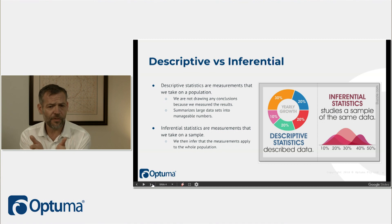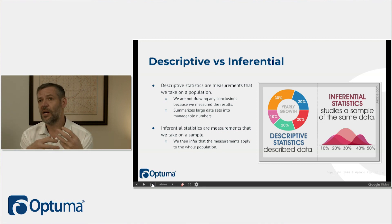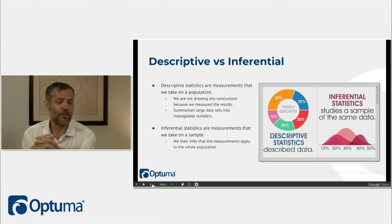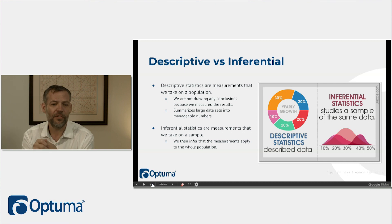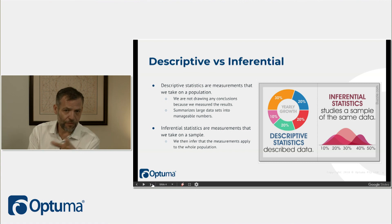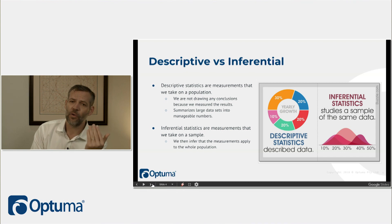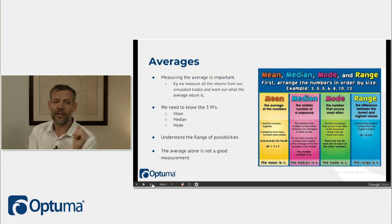With descriptive statistics we're not drawing any conclusions because we've measured everything — there's no inference. It is purely a description of what actually happened. With inferential statistics we're inferring that the measurements apply to the whole population. There are also some variations in calculations based on whether it's a sample calculation or a population calculation.